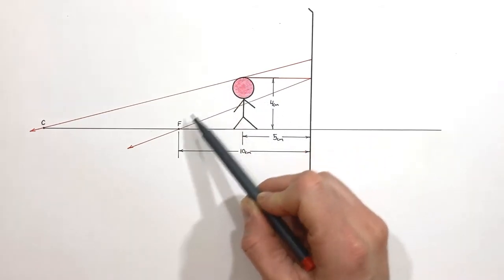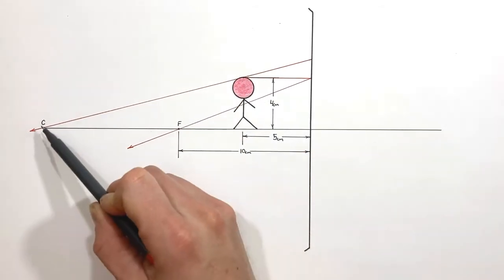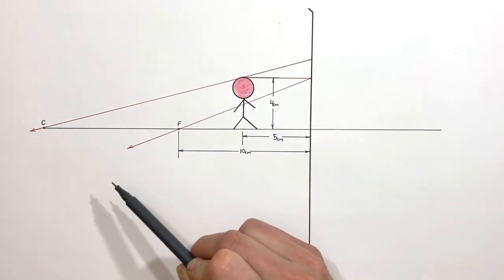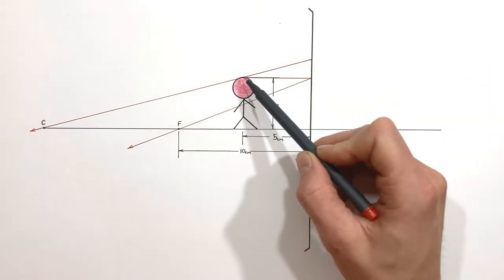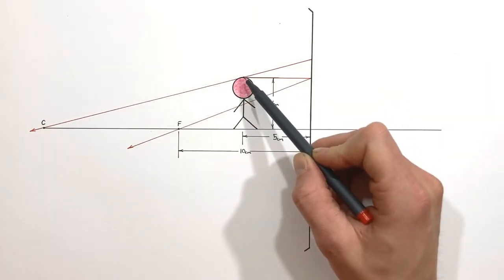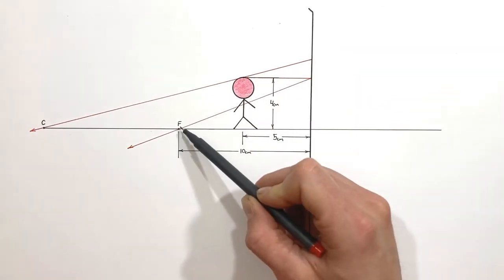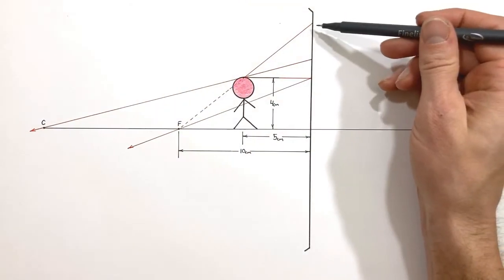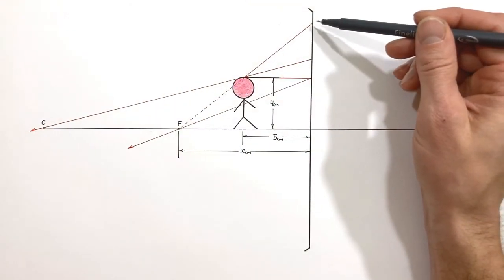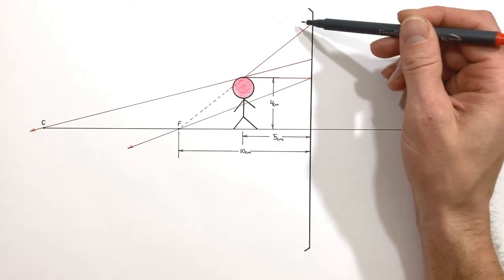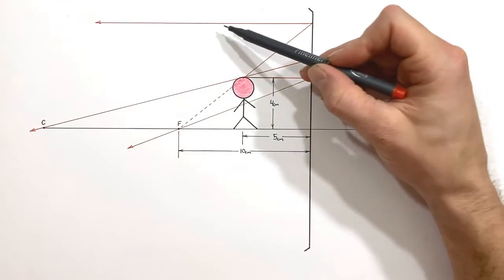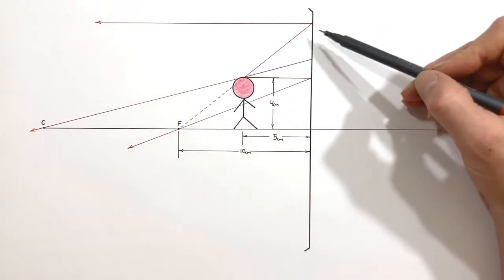Last we have the focal ray. Typically the focal ray would be the ray which passed from the object through the focal point, but much like we saw with the center point, if a ray travels through the focal point it's never actually going to strike the mirror. So we're going to draw this ray from the top of the object towards the mirror as though it had passed through the focal point, and when that ray strikes the mirror it's going to bounce off parallel to the principal axis.